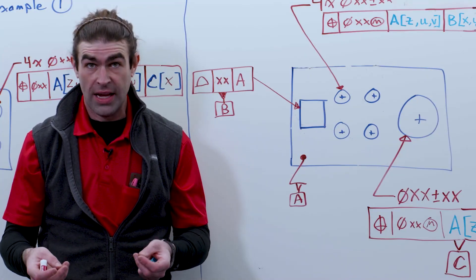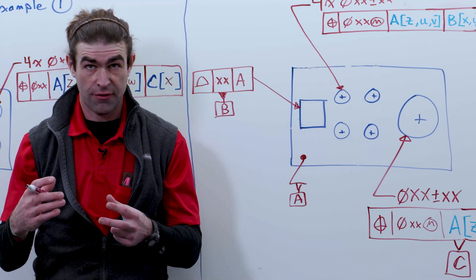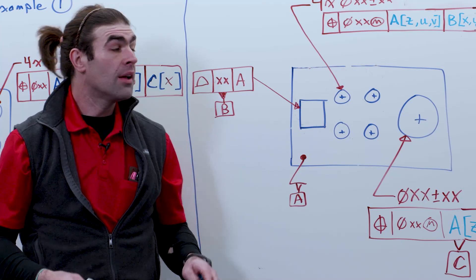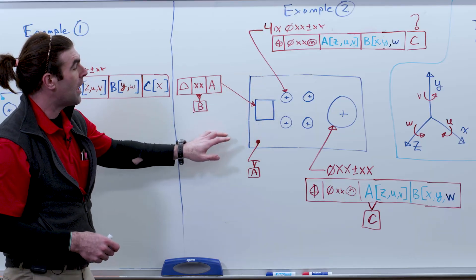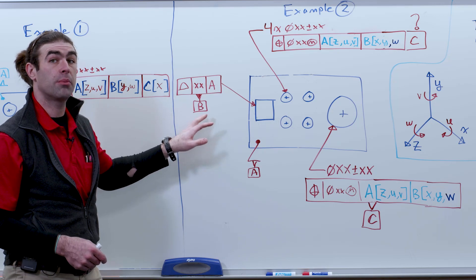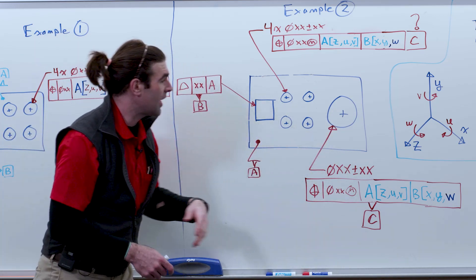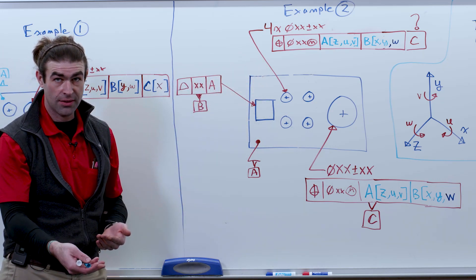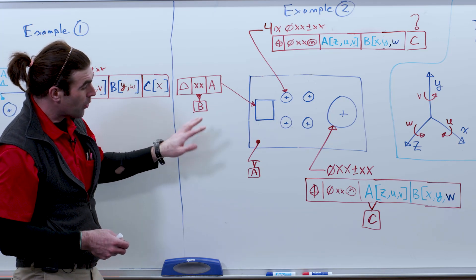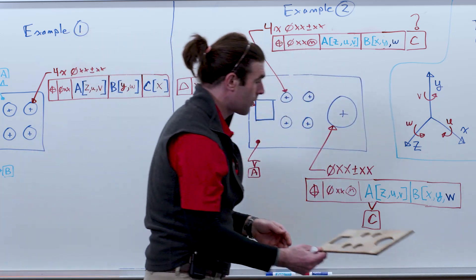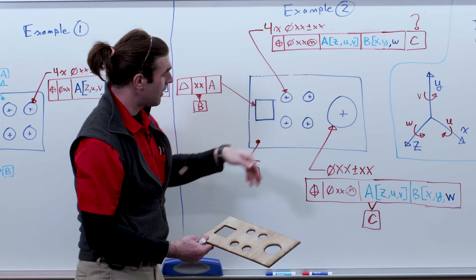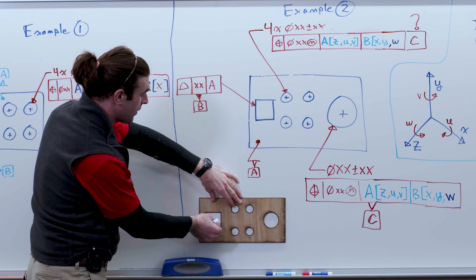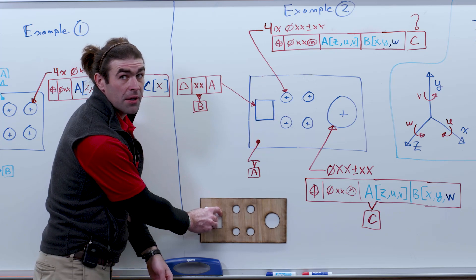Why would you want to change the degrees of freedom? It can happen if you have a feature of size or a regular feature of size used as a datum that takes away too many degrees of freedom. The example here has a block with a square hole serving as datum B, a round hole serving as datum C, and four holes in the middle positioned to A, B, and C. When we go to check this part and inspect the position, A takes away three degrees of freedom just like before. But now B, because it's a square feature, takes away three degrees of freedom as well, so we actually don't need datum C.